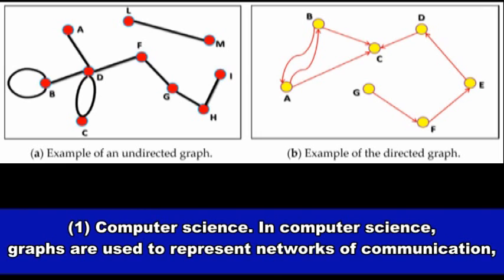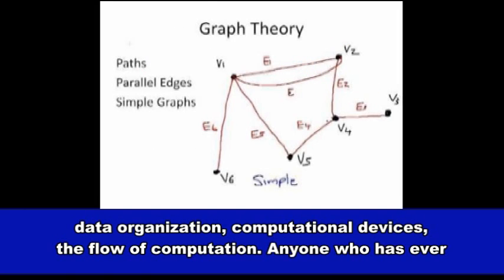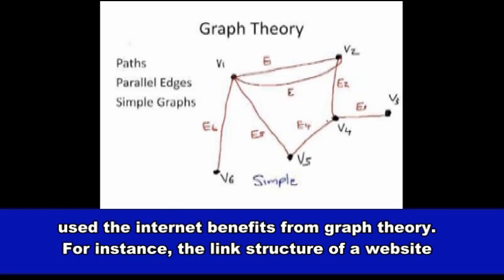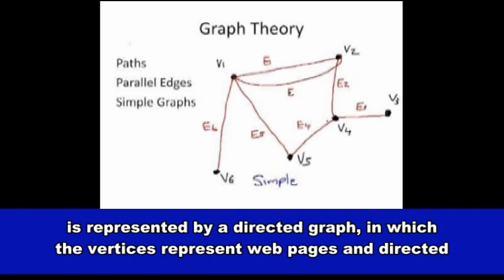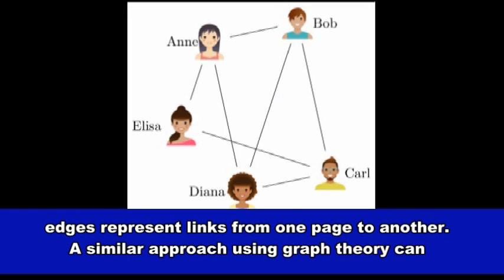Computer Science: In computer science, graphs are used to represent networks of communication, data organization, computational devices, and the flow of computation. Anyone who has ever used the internet benefits from graph theory. For instance, the link structure of a website is represented by a directed graph, in which the vertices represent web pages and directed edges represent links from one page to another.